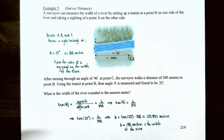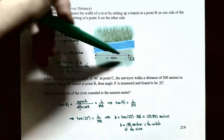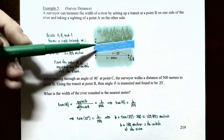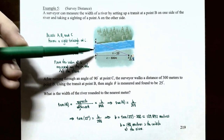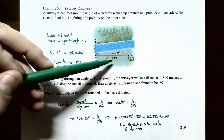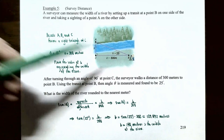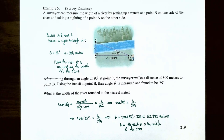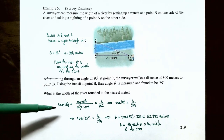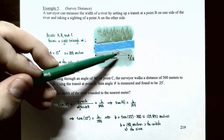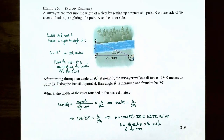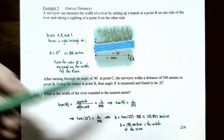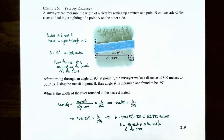The question is: what is the width of the river, rounded to the nearest meter? We want side B, which represents the river's width — the opposite side from the 25-degree angle. The 300 meters is side A, the adjacent side. Since we have opposite and adjacent, we use the tangent function: tan(25°) = B/300. Multiplying both sides by 300, B = 300 times tan(25°).